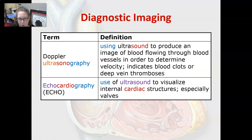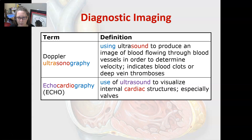Doppler ultrasonography uses ultrasound to produce an image of the blood flowing through blood vessels in order to determine velocity — how fast it's flowing through. It can indicate blood clots or deep vein thromboses.